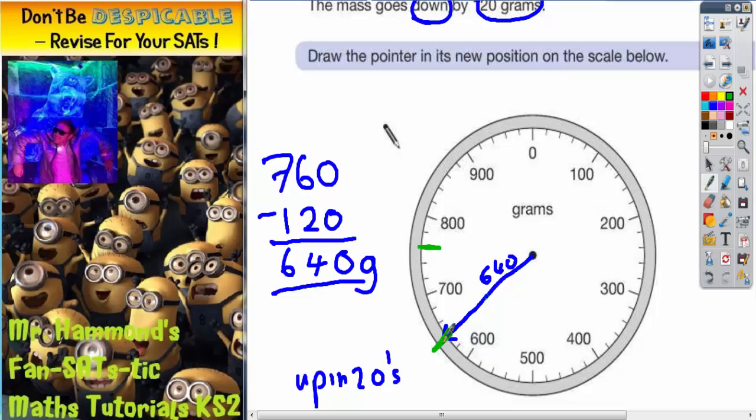But as you can see, whichever way I do it, the arrow is going to be in the same place. It's got to go there. So that is your answer.